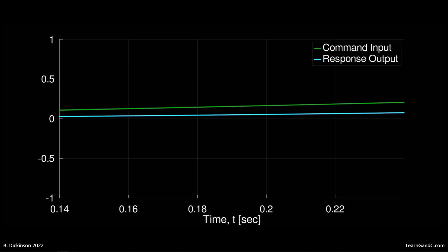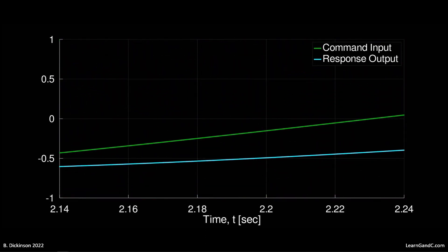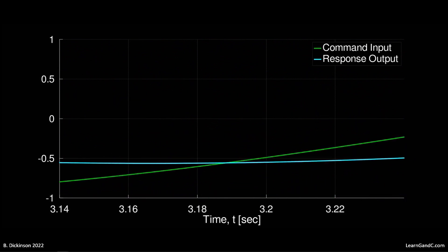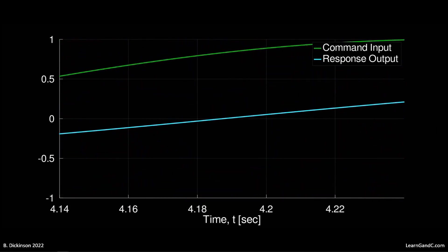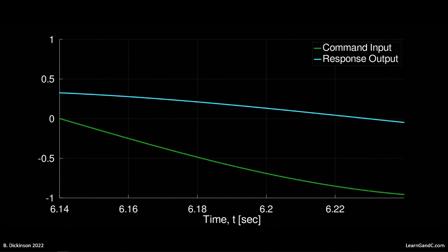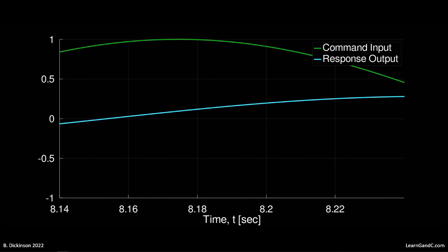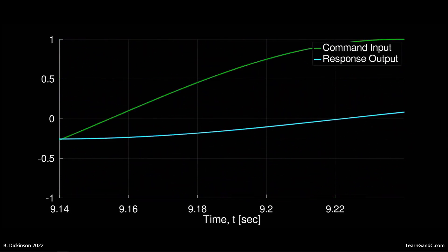The attenuation of the closed-loop response for increasing frequency of the command input can be observed also in the time domain. The command input here is a chirp signal, a sinusoid with increasing frequency and time. Note the reduction in the response output magnitude as time increases.